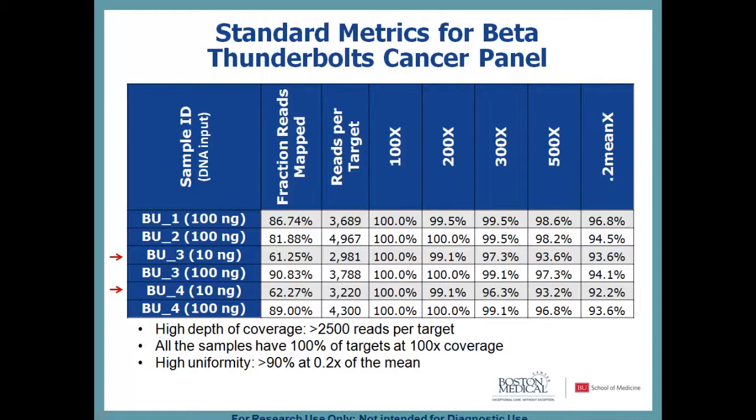You get great coverage and good uniformity, even though this was the beta panel. Highlighted here with red arrows are two cases where we used either 100 nanograms or 10 nanograms of DNA. For the two 10-nanogram samples you can still see uniformity up in the 92–93% range at 0.2× of mean coverage — very good coverage even with the beta panel.